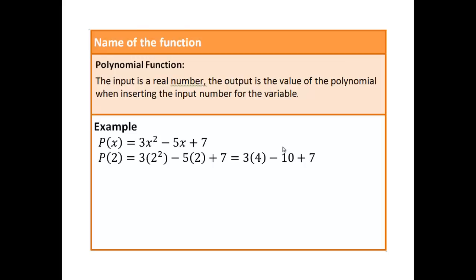So p of 2 in this case, you're replacing the x with 2's. So 3 times 2 squared minus 5 times 2 plus 7. And then you evaluate it, which will give you p of 2 to be 9. p of 0 replace x with 0, so p of 0 would be 7.